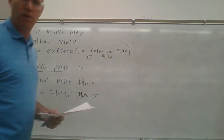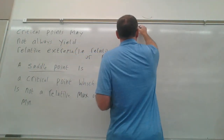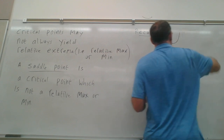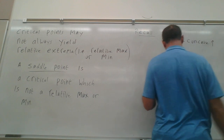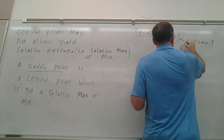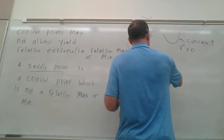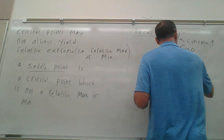Critical points may not always yield relative extrema — either a relative max or min. So we define a saddle point as a critical point which is not a relative max or min. Recalling from Math 150: concave up corresponds to the second derivative being greater than zero, and concave down corresponds to the second derivative being less than zero.